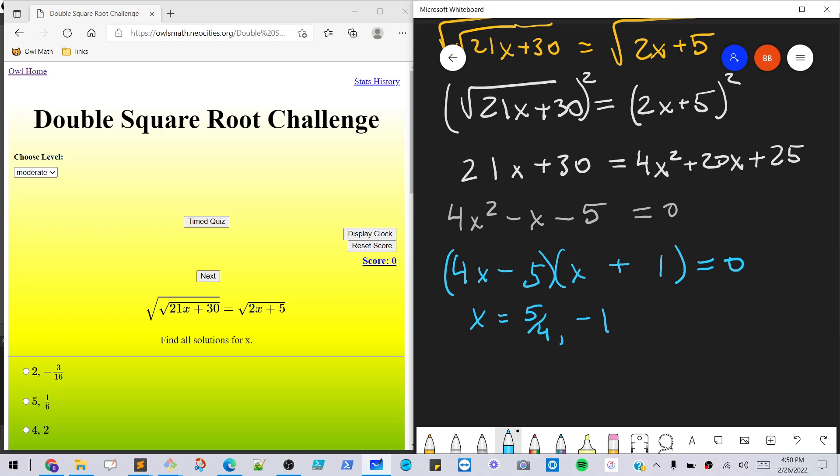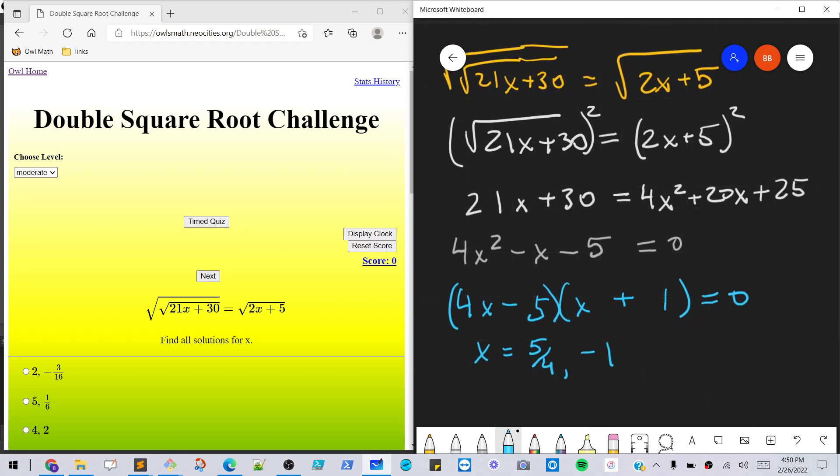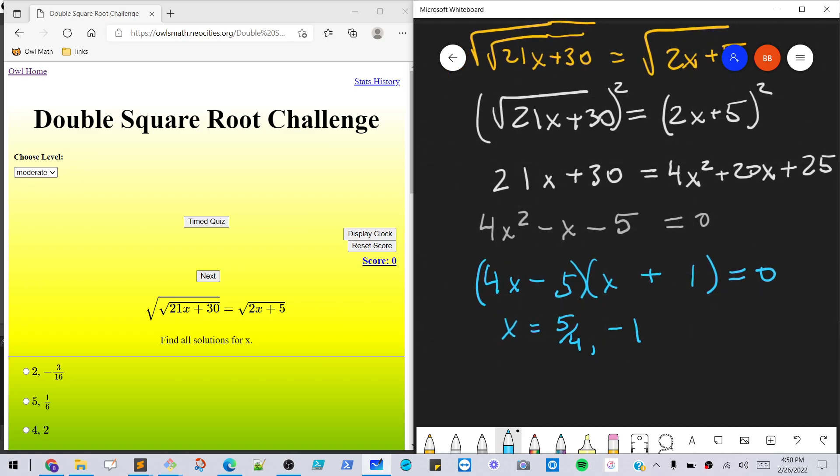There's our two roots, then we can check each of these. Going back to the original problems, we want to make sure we don't get an extraneous root. First, let's plug in, let's look at the negative 1 first and plug it in. So if we get, let's see, the square root of the square root of 21 times negative 1 plus 30.